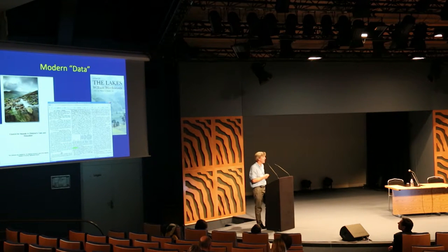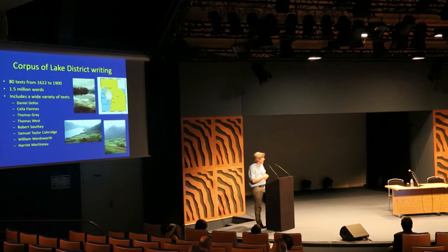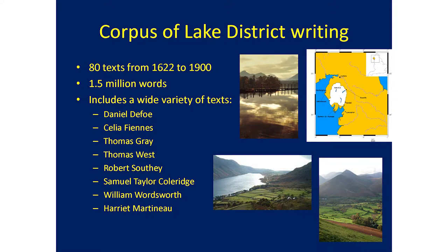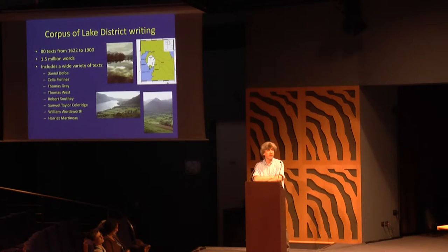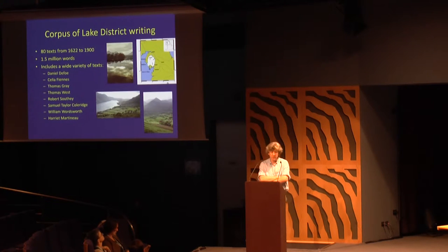Rather than set distant reading and close reading in opposition to each other, what we've actually been trying to do is bring them together and use geography as a way of doing that. The work I'm going to talk about today makes use of a relatively small corpus — about 80 texts published between the 17th century and 1900 on the English Lake District. The English Lake District is a relatively small area in the northwest of England, just up the road from Lancaster. It's probably the most written-about rural environment anywhere in the world.